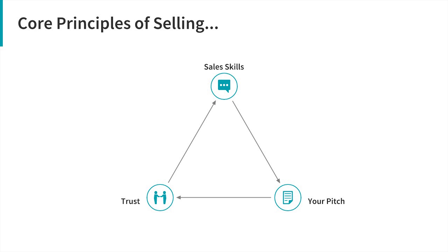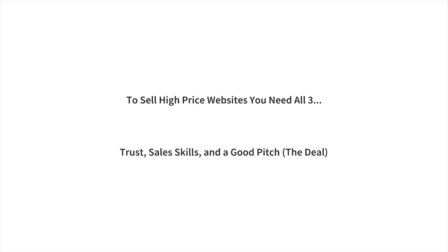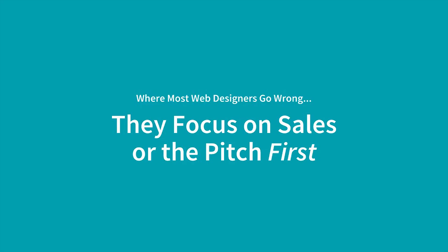We could be selling the exact same thing — say a $500 laptop — but one person has a much better ability to sell it. That's sales skills. Or we both have the same sales ability but one of us has a much better deal. And trust ties into all of it. If you want to ever sell websites at a high price, you're going to have to start somewhere on this triangle. Most people who don't know about this framework focus on sales skills or pitch first — and that's where they go wrong.